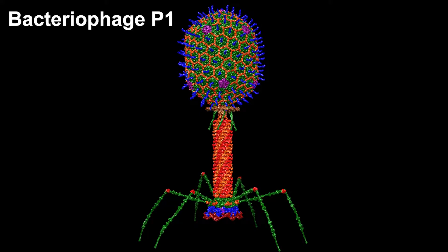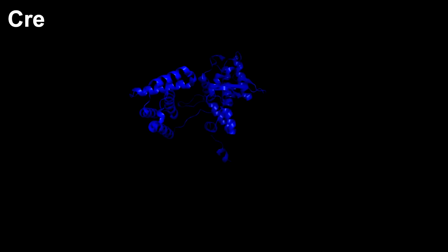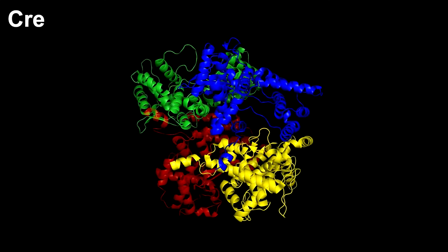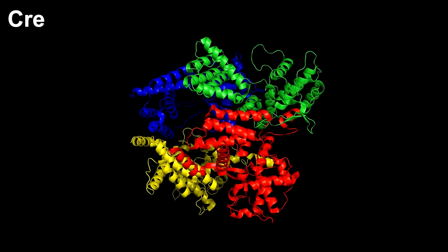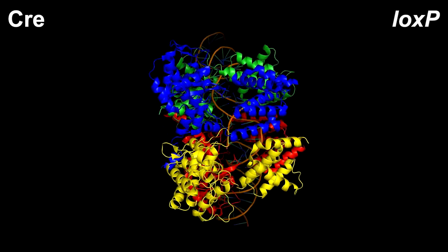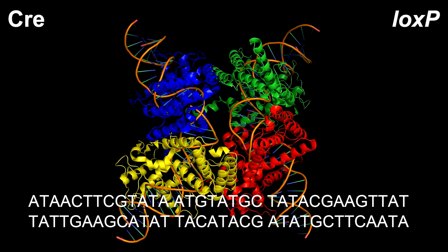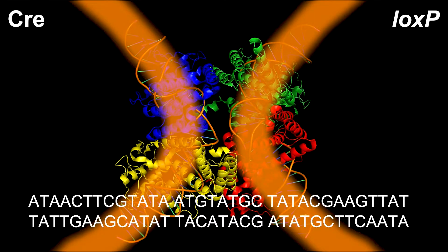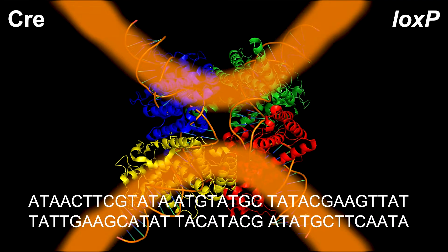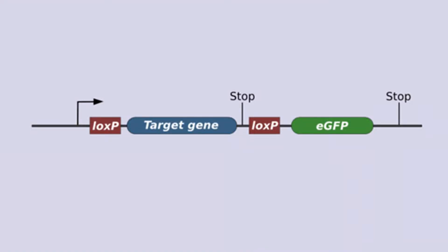Bacteriophage P1 is a virus that infects E. coli bacteria. In the genome of this virus, there is a gene that encodes the protein Cre recombinase. The Cre protein can bind four identical copies of itself to form the active version of the protein. The active form of the protein can then bind two LoxP sequences. Each LoxP sequence is 34 nucleotides of DNA. Cre recombinase acts on the LoxP sequences by inducing one cut in the middle of the sequence; the cut DNA is then recombined in a different way. The recombination effectively causes everything in between the two LoxP sequences to be cut out of the genome, including one of the LoxP sequences.